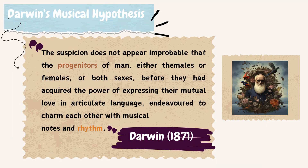First, we have Darwin's Musical Hypothesis. Charles Darwin, who gave the theory of evolution, suggested in 1871 that early human ancestors may have used musical notes and rhythms as a form of communication — possibly to attract mates — before they developed the power of articulate speech. He stated: 'The suspicion does not appear improbable that the progenitors of men, either the males or females or both sexes, before they had acquired the power of expressing their mutual love in articulate language, endeavoured to charm each other with musical notes and rhythm.' This remains a hypothesis, not a theory, as there is no supporting evidence.